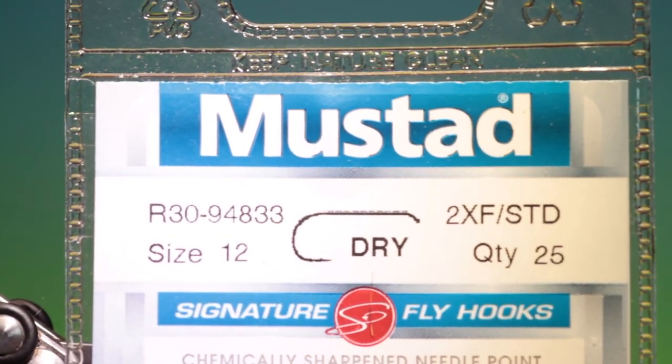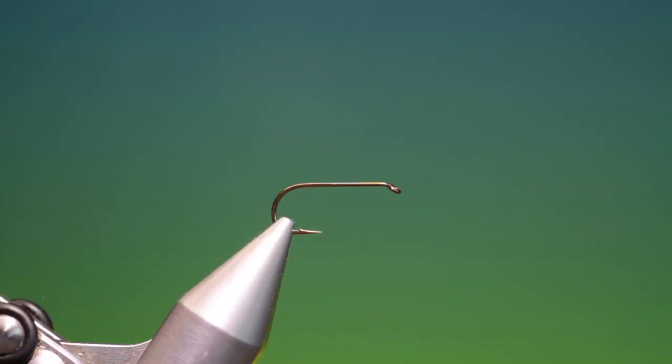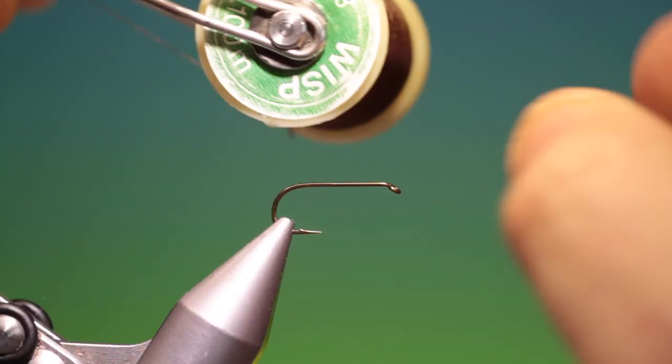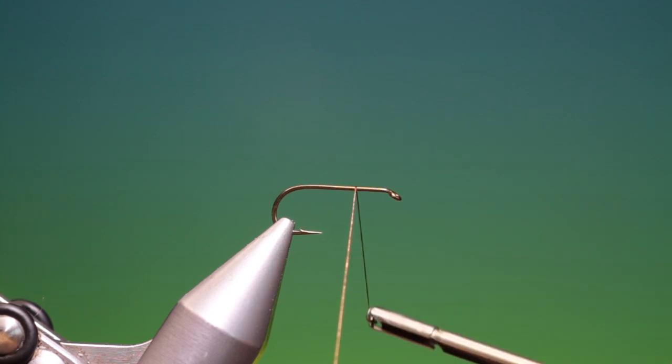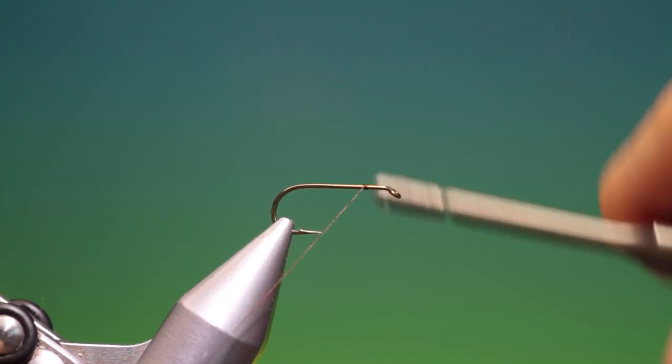Okay, we'll start with the Mustard R30 size 12 dry fly hook. We've got some Wisp 8-0 brown tying thread. We'll just start here.